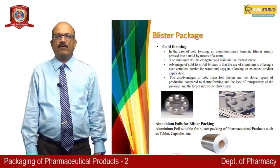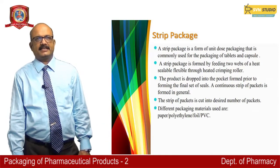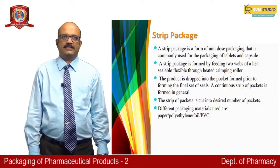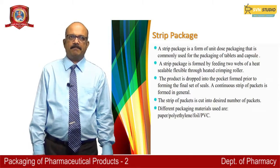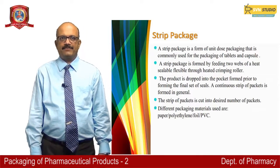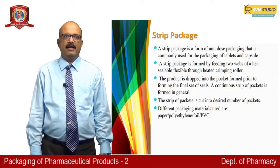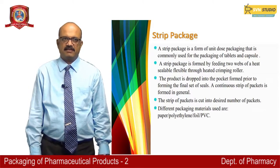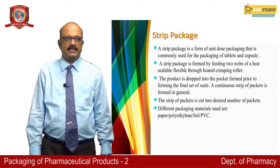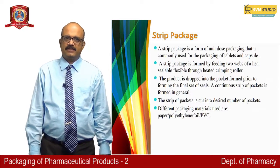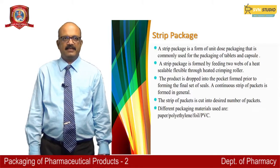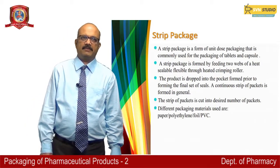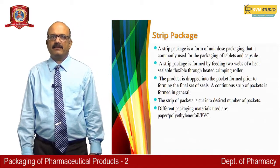The strip package is a form of unidose packaging commonly used for tablets and capsules. It is formed by feeding two webs of heat-sealable flexible material through heated crimping rollers. The product is dropped into the pocket formed prior to forming the final set of seals, and a continuous strip of packets is formed. The strip of packets is then cut into the desired number of packets. Packaging materials used for strip packaging include paper, polyethylene, foil or PVC.